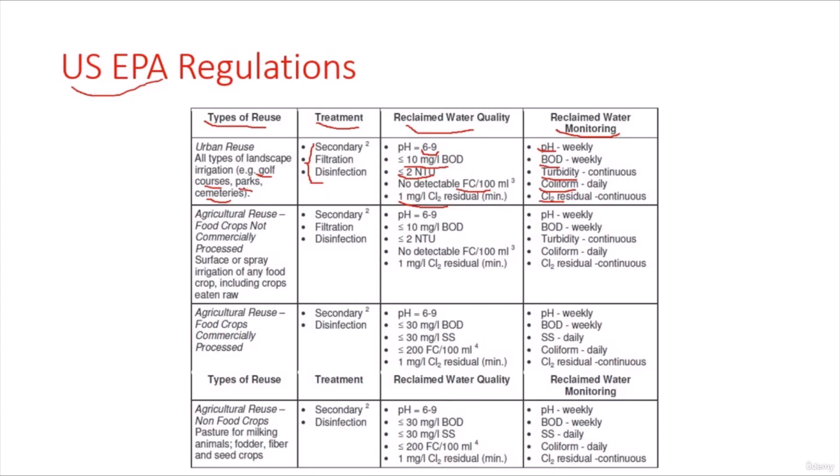These are high requirements for landscaping crops because those crops might be in direct contact with humans. For example, if you go to a park and sit on the grass being irrigated with treated wastewater, there is direct contact between you and the grass, therefore we must highly treat this water.